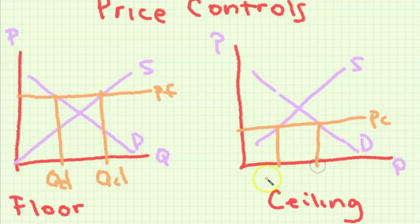The price floor leads to higher quantity supplied than quantity demanded so a surplus, and a price ceiling leads to higher quantity demanded than quantity supplied so an excess demand. Both of these lead to a deadweight loss because again it's an intervention.